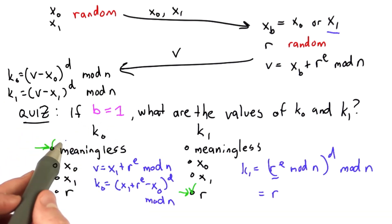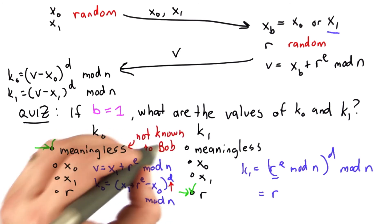The value of k0 is meaningless and can't be determined by Bob because Bob doesn't know the value of d.